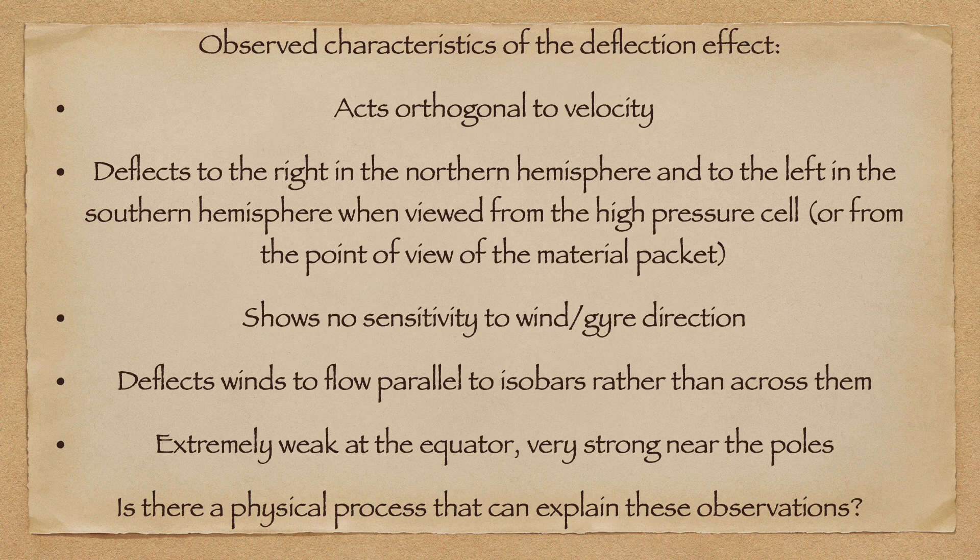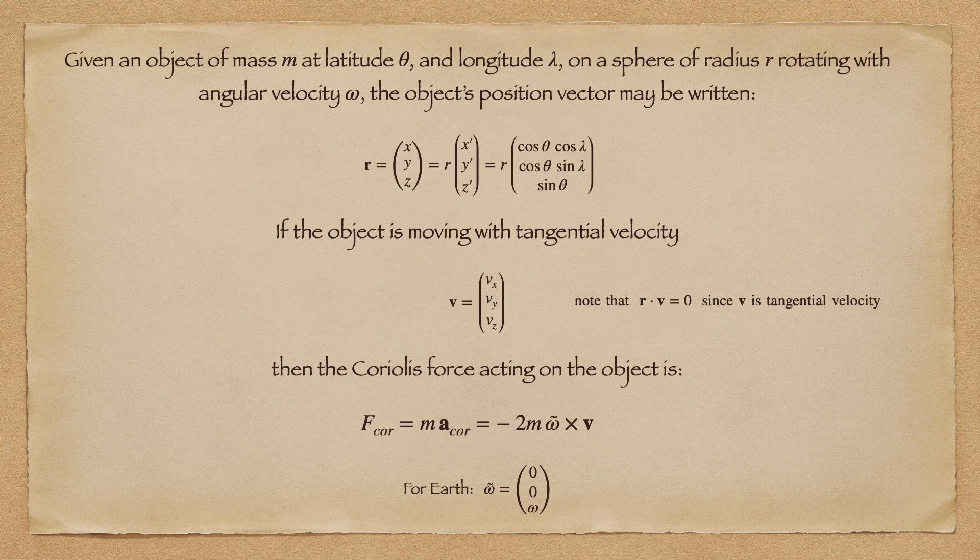So, to review. Our observational evidence suggests that there is a deflection effect that acts orthogonal to material velocity, deflects to the right in the Northern Hemisphere and to the left in the Southern Hemisphere when viewed from the high pressure cell, or relative to the motion of the material packet. This orthogonal deflection shows no sensitivity to the direction of velocity, but acts uniformly to deflect winds and ocean currents to flow parallel to isobars rather than orthogonal to them. All of which begs the question: is there a physical process that can explain all of these observations?